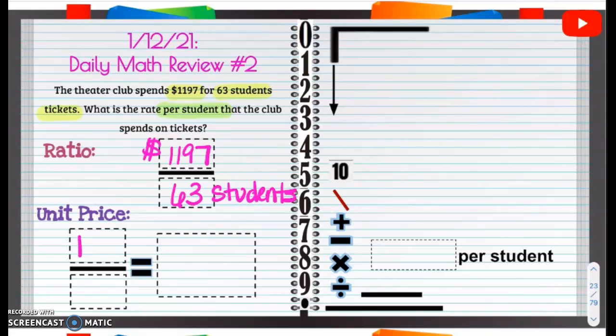Now, all we're going to do, $1,197, 63. I'll put students. For students, we're going to divide here. 1,197 divided by 63.